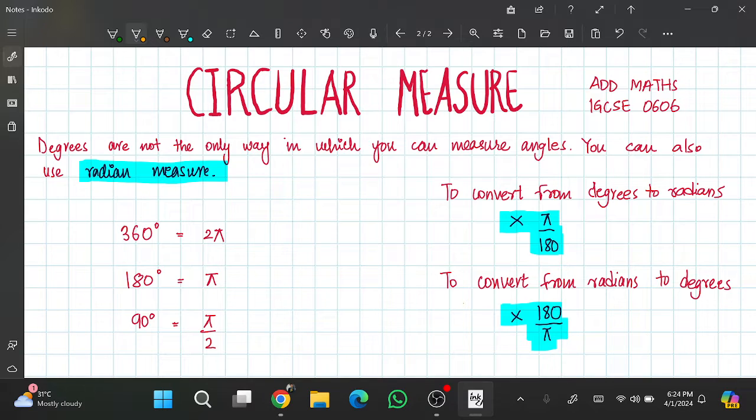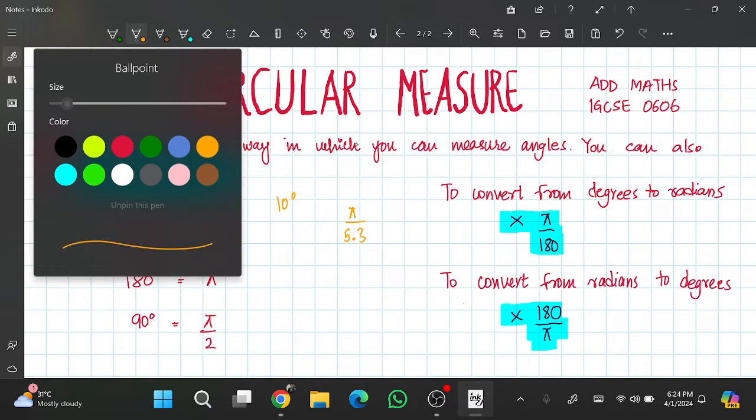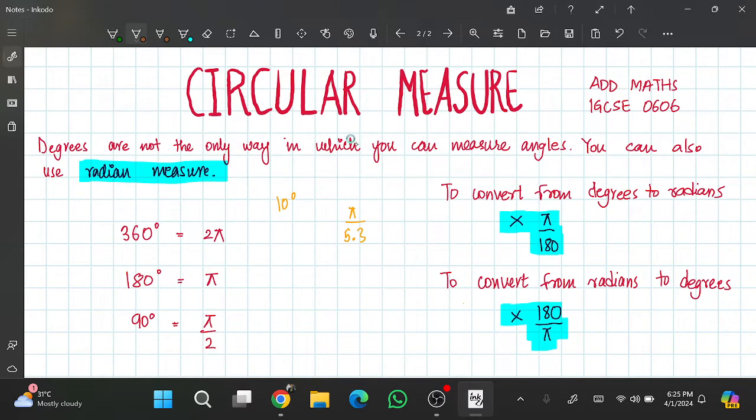Now of course I can just do easy times 2 divided by 2 and get those values, but what if I have something like 10 degrees, or what if I want to know what π/5.3 is in degrees? How will I know that?